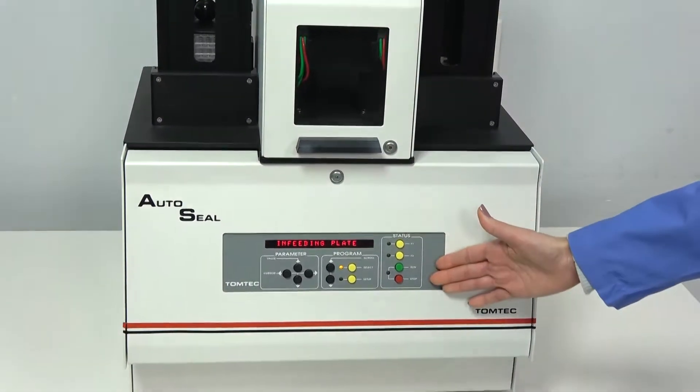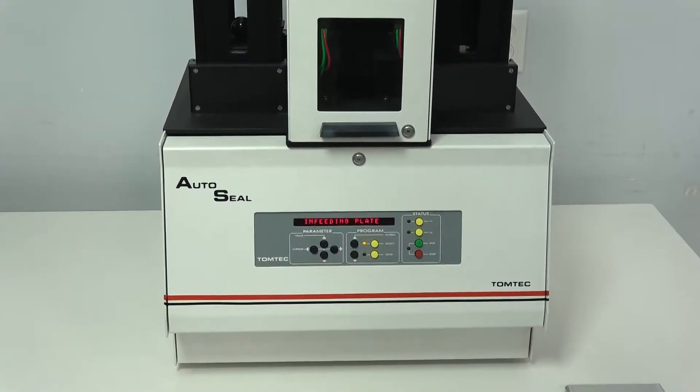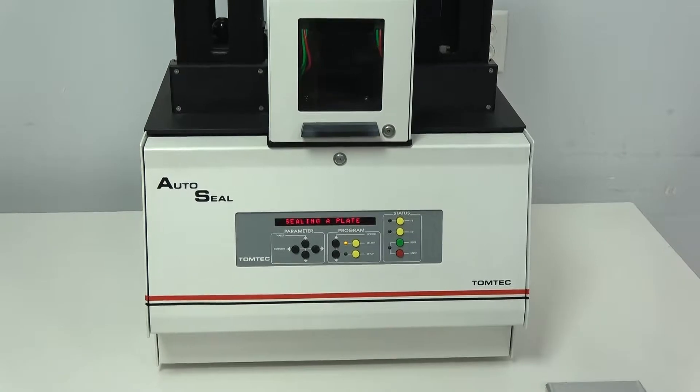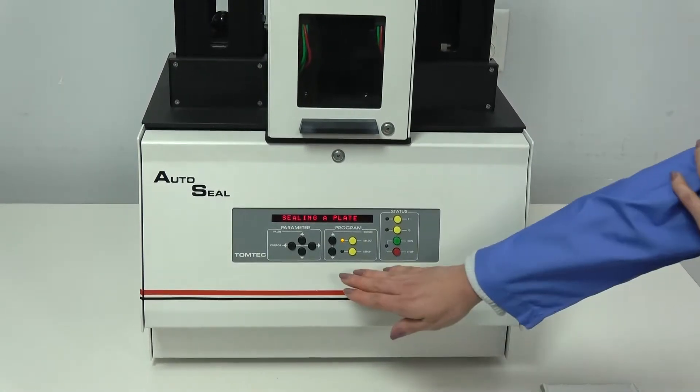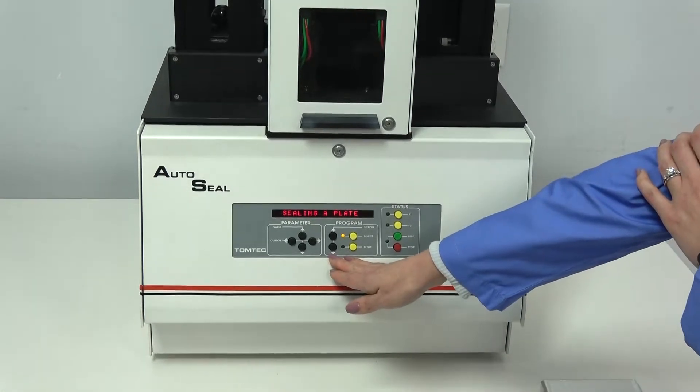On the front here you have 12 programmable settings. These are time temperature sequences that you can create a custom label for and find with the toggles located here.